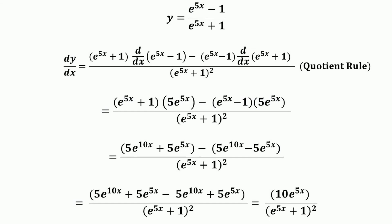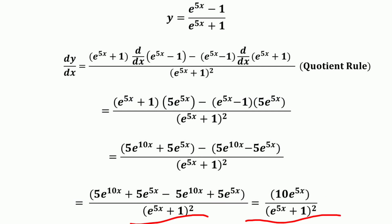Opening the brackets gives 5e raised to the power 10x plus 5e raised to the power 5x, minus 5e raised to the power 10x plus 5e raised to the power 5x, all divided by the denominator squared. The terms 5e raised to the power 10x and minus 5e raised to the power 10x cancel. The remaining terms are 5e raised to the power 5x plus 5e raised to the power 5x, which equals 10e raised to the power 5x, divided by e raised to the power 5x + 1, squared.